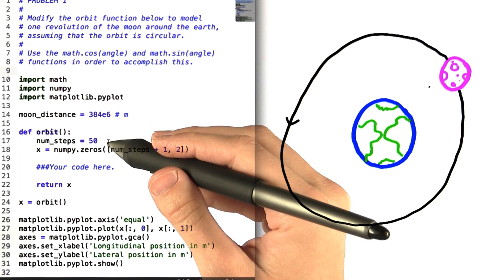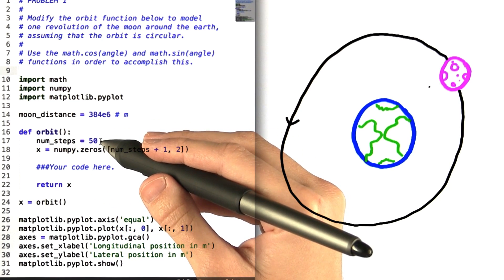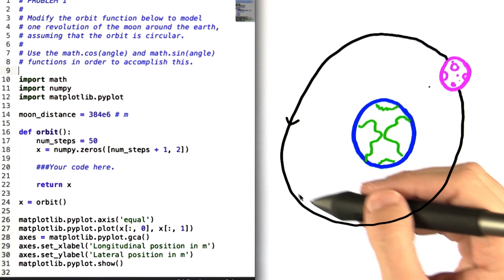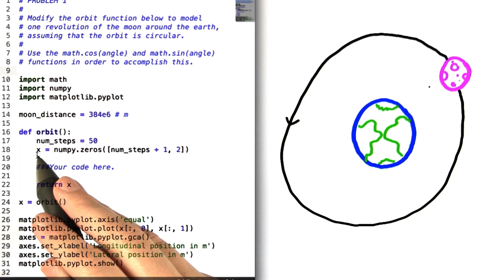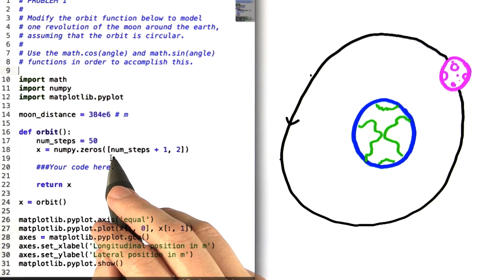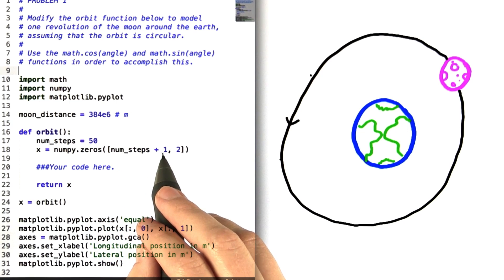Inside orbit, you can see that the number of time steps that we're going to look at as the moon moves in its orbit around the earth is 50. We've also created a two-dimensional array called x, which is initialized with zeros. The number of rows in x is equal to the number of time steps in the moon's orbit plus 1.